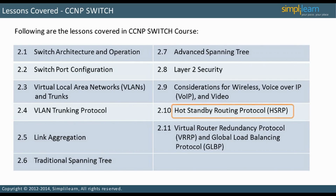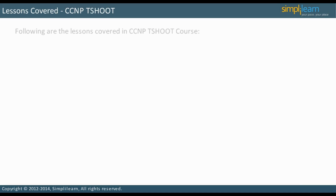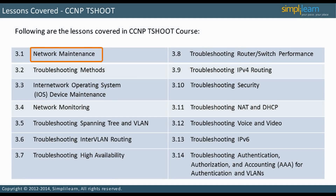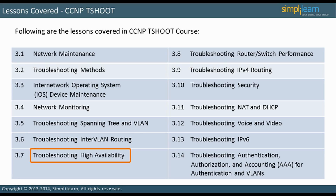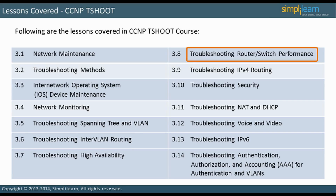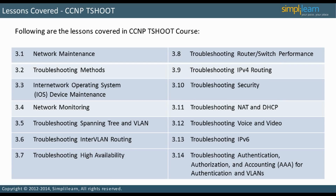The last three lessons deal with First Hop Redundancy Protocols: Hot Standby Routing Protocol, Virtual Router Redundancy Protocol, and Global Load Balancing Protocol. In the next slide, we will discuss the lessons in the CCNP T-Shoot Module. The first lesson is Network Maintenance, the second discusses Troubleshooting Methods, then iOS Device Maintenance, followed by Network Monitoring. The remaining lessons detail troubleshooting for Spanning Tree and VLAN, Inter-VLAN Routing, High Availability, Router and Switch Performance, IPv4 Routing, Security, NAT and DHCP, Voice and Video, IPv6, and finally AAA for Authentication and VLANs.